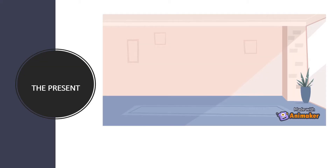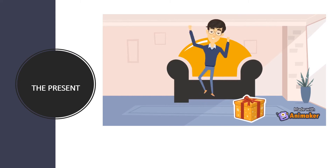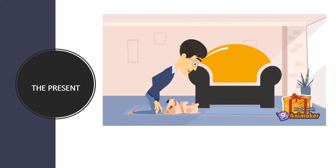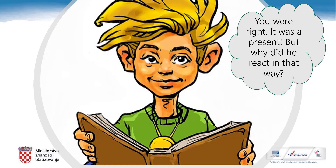Definitely, she was carrying something in her hands. It was a present. Let's see what happens next. You are absolutely right, Harry — it was a present. But why did he react in that way? First he was happy, petting the dog. Then he was angry, crying. What happened? What do you think?